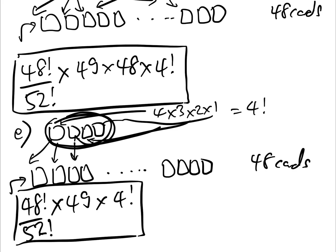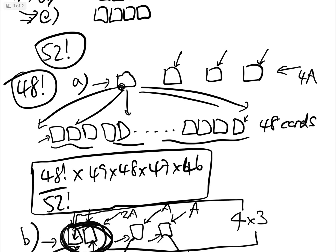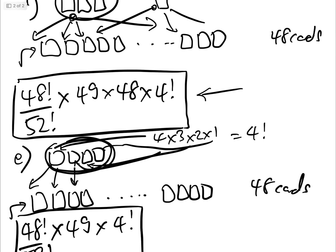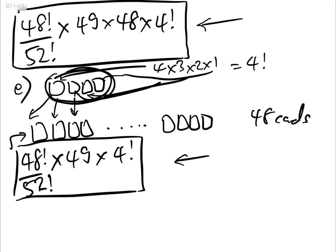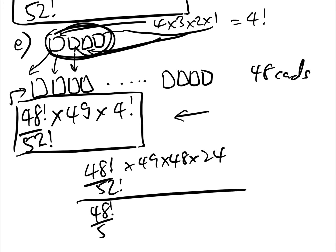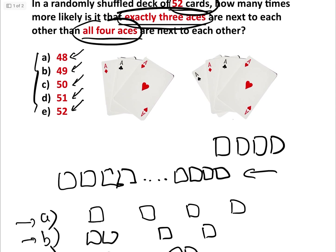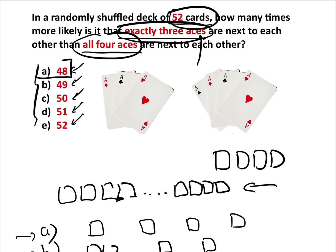The question asks how many times more likely case D is than case E. Dividing D by E: we have 48 factorial over 52 factorial times 49 times 48 times 4 factorial divided by 48 factorial over 52 factorial times 49 times 4 factorial. Everything cancels except the 48, leaving us with the answer of 48. Therefore it is 48 times more likely to get exactly three aces together than all four aces together.